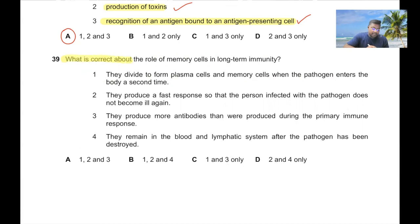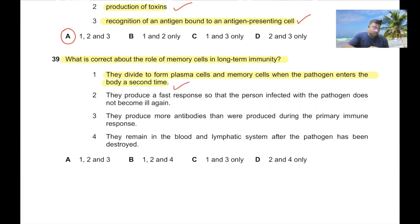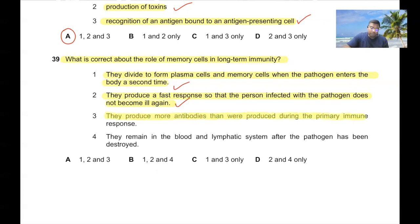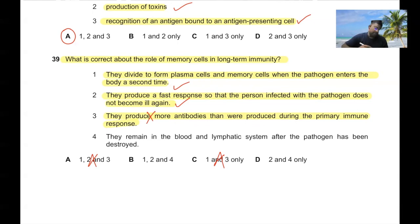Question 39: What is correct about memory cells in long-term immunity? They divide to form plasma cells and memory cells when the pathogen enters the body a second time — correct. They produce a fast response so the person doesn't become ill — correct. Memory cells don't produce antibodies directly, so option 3 is wrong. They remain in the blood and lymphatic system after the pathogen is destroyed — correct. Option B, 39B.